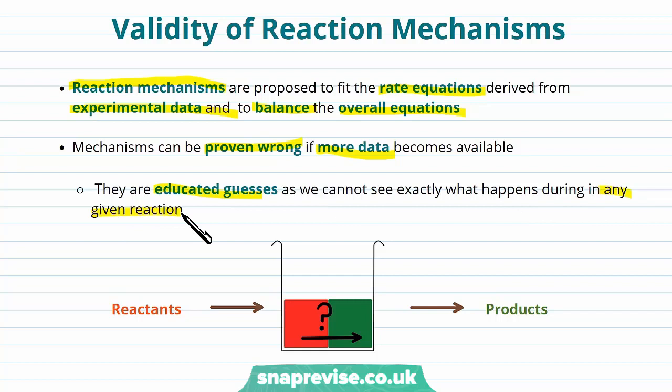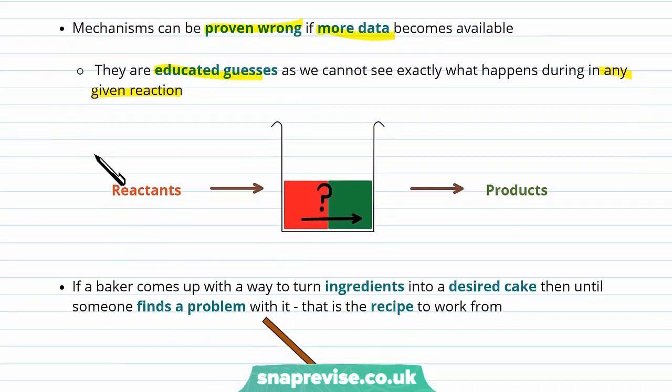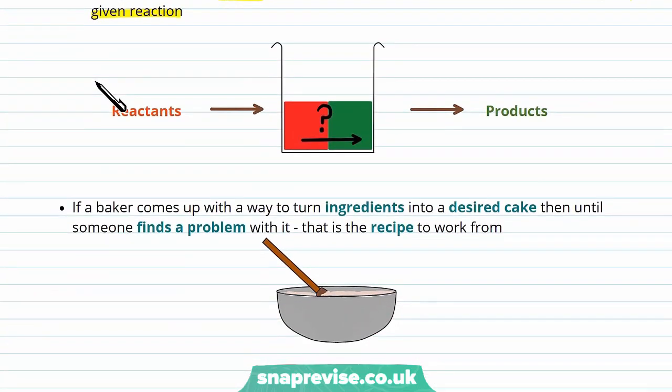The reaction starts off, some things happen in between and we get our products. It really is educated guesswork at what goes on during the reaction, because they happen on such small timescales. Going back to our analogy, if the baker comes up with a way to turn some given ingredients into a desired cake, until someone finds a fault with this cake and shows that it's not actually what was intended, then that is a good recipe to work from.